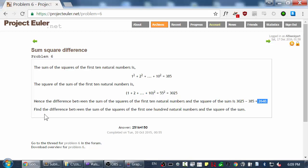Now what this problem wants us to do is find the difference between the sum of the squares of the first 100 natural numbers. So instead of just going up to the first 10 natural numbers, it just wants us to expand this to the first 100 natural numbers. And here's the answer right here, but we'll go ahead and solve this ourself, starting from a blank editor.